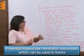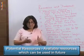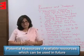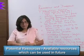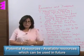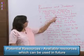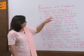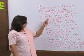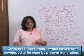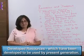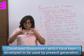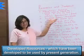Potential resources are those which are available in nature but will be utilized in the future — we are not making use of them right now. Developed resources are those which have been developed for the present generation — resources we are currently utilizing and making use of.